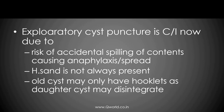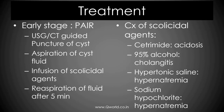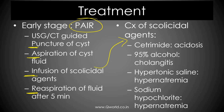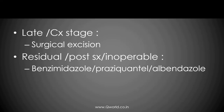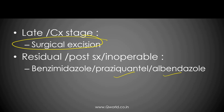Cyst puncture for diagnosis is contraindicated because there is a risk that hydatid contents will be spilled out causing anaphylaxis. Treatment is the PAIR procedure: Puncture, Aspiration of fluid, Infusion of a scolicidal agent to kill the heads of the worms, and then Re-aspiration of fluid after 5 minutes. Complications of scolicidal agents include: cetrimide can cause acidosis, alcohol can cause inflammation of the biliary system, and hypotonic saline or sodium hypochlorite can cause hyponatremia. In later stages, if PAIR does not work, full surgical excision is needed. Postoperatively, prophylactic albendazole can be given.